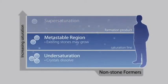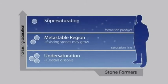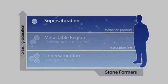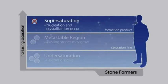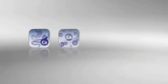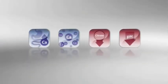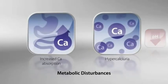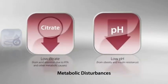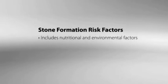Normal patients' urine is not as saturated and they have sufficient quantities of inhibitors present. But the urine of patients with kidney stones is more saturated and may also lack inhibitors, increasing the propensity for crystallization of stone-forming salts. There are two reasons for this. First, stone formers are known to suffer from a variety of metabolic disturbances that increase the amount of stone-forming substances excreted in the urine and also decrease the excretion of inhibitors. Second, a number of common nutritional and environmental factors can cause abnormalities in the urine.